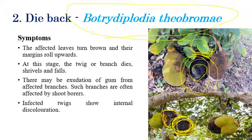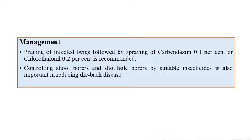For management of dieback, pruning the infected plant parts is recommended, followed by application of Carbendazim at 0.1 percent and Chlorothalonil at 0.2 percent. Controlling shoot borers or shot-hole borers using insecticides is also recommended, as these insect vectors can help spread the disease.